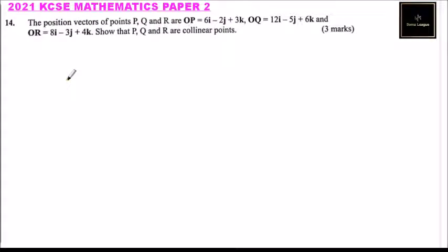Question number 14. The position vectors of P, Q, and L are: OP equals 6i minus 2j plus 3k, OQ equals 12i minus 5j plus 6k, and OL equals 8i minus 3j plus 4k. Show that P, Q, L are collinear.